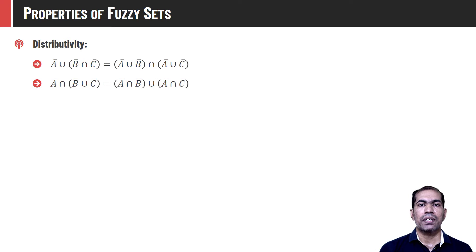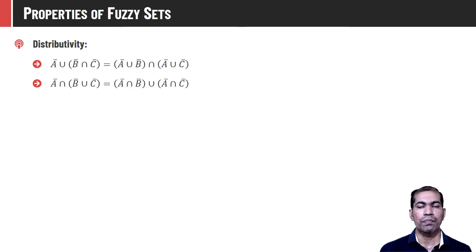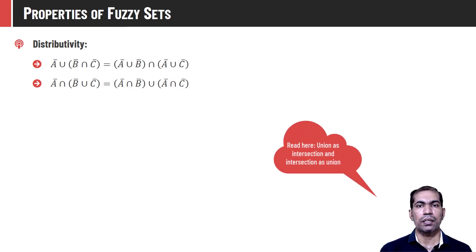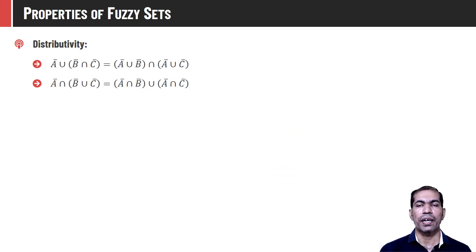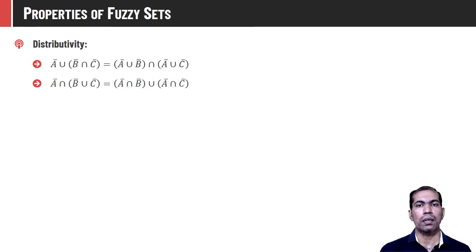Fuzzy sets also have the property of distributivity — that is, A union (B intersection C) equals (A intersection B) union (A intersection C). In the same way, it is also true for A intersection (B union C). We simply take the outer operator with the inner fuzzy sets.